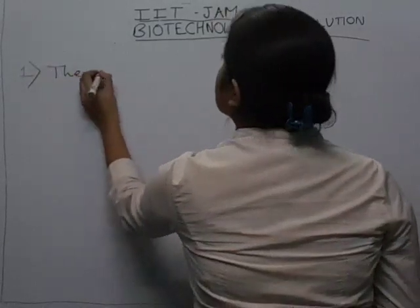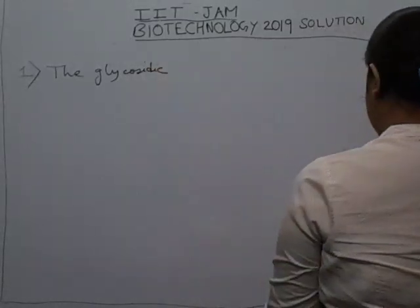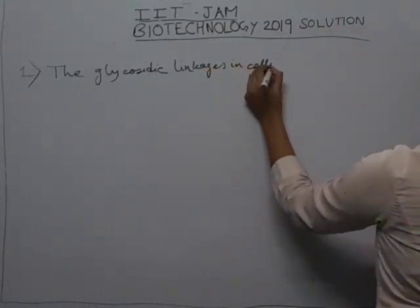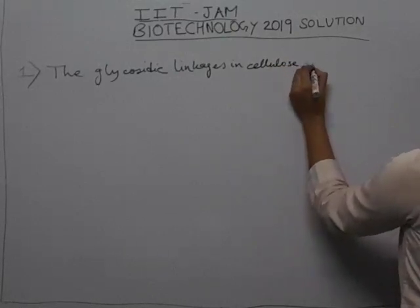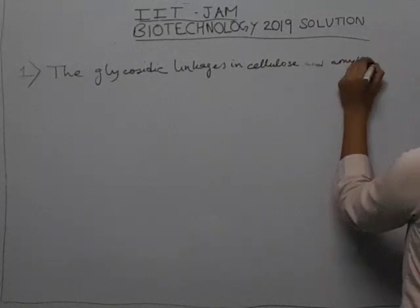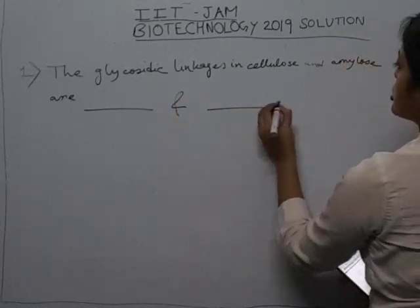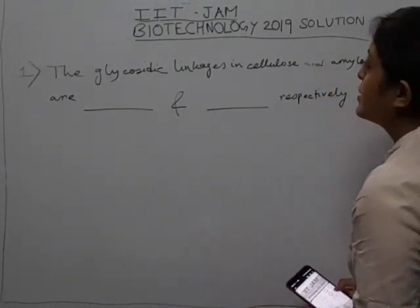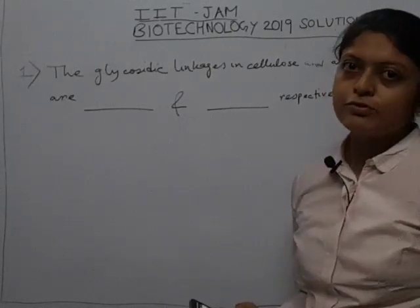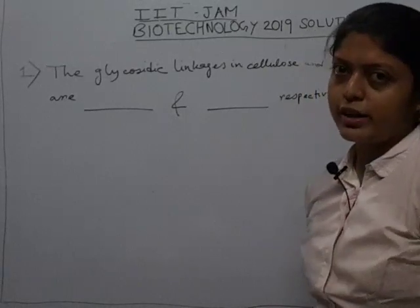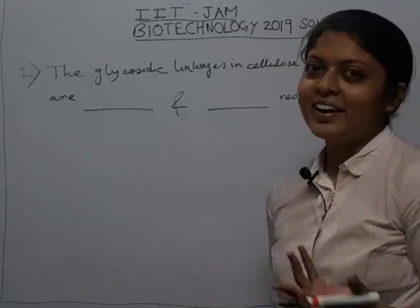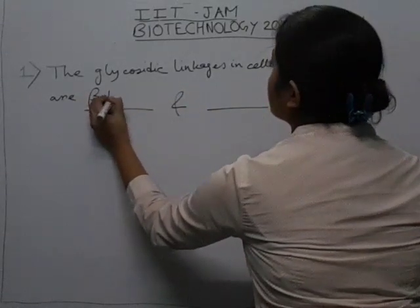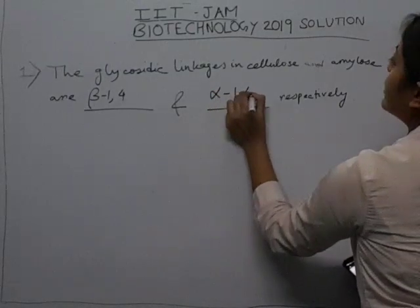The question asks about the glycosidic linkages in cellulose and amylose, respectively. From our knowledge, cellulose has beta 1,4 glycosidic linkage and amylose has alpha 1,4 glycosidic linkage. As you can see, it's completely knowledge-based — study the topics really well and you will get the answers right. So this is beta 1,4 glycosidic linkage and this is alpha 1,4 glycosidic linkage.